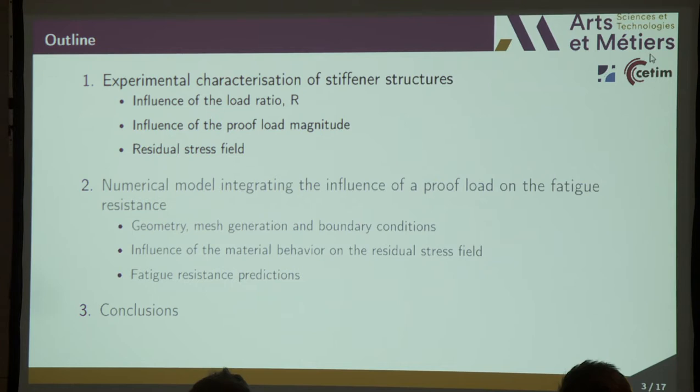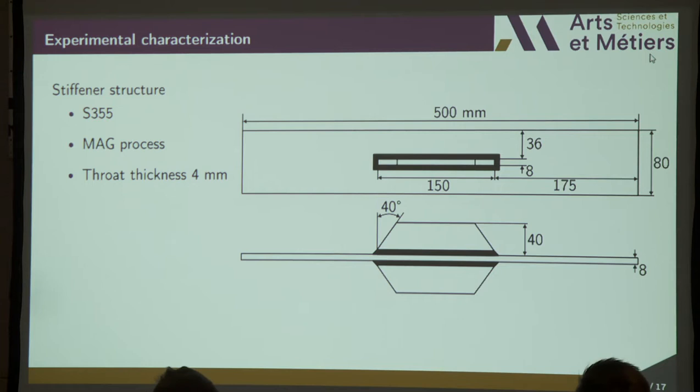About the stiffener structures, I give the main macroscopical dimensions in this figure. It is made with S355 steel using the metal active gas process and a throat thickness of 4 mm.